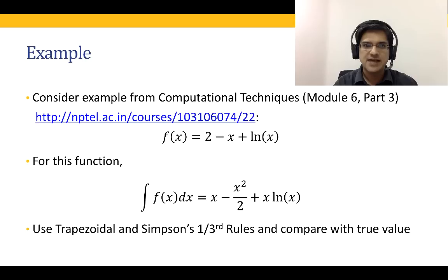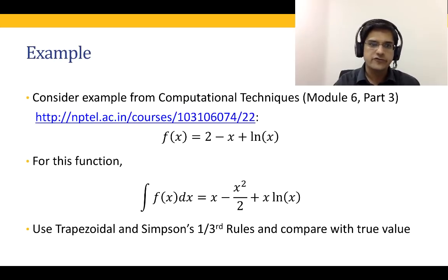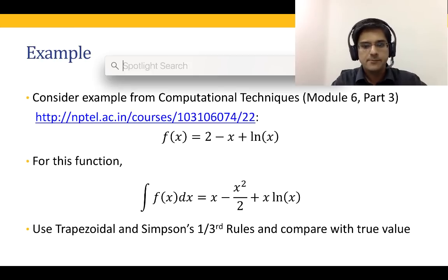Let's take up an example and solve it in MATLAB. The theoretical aspects were covered in module six of computational techniques, specifically module six part three. We are going to calculate the integral from one to two of f(x) dx using the trapezoidal rule and Simpson's one-third rule. The integral for this f(x) is given, so let's go to MATLAB.